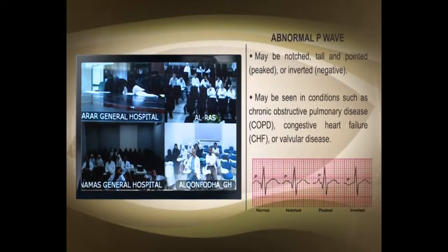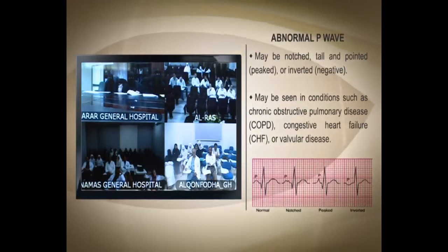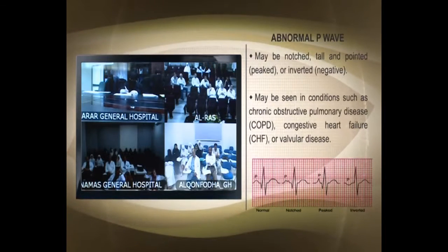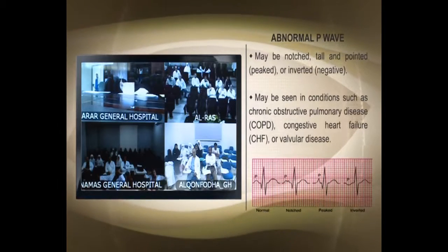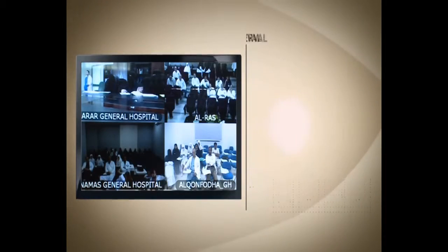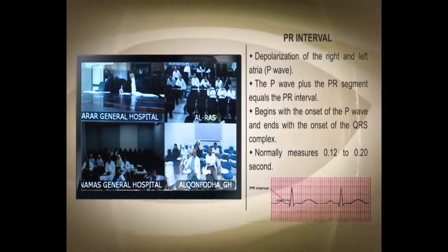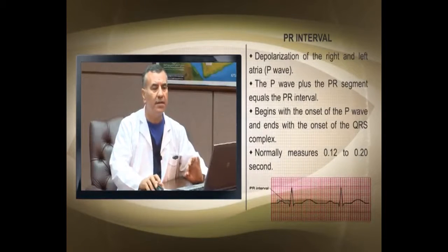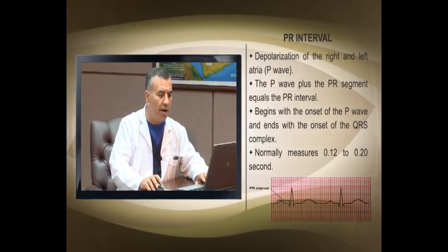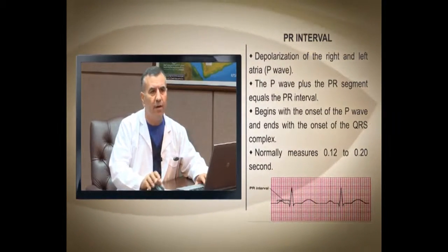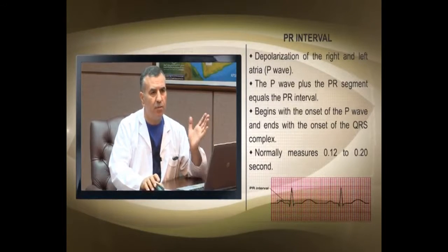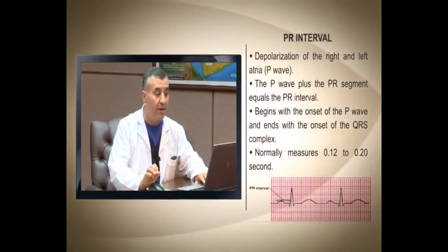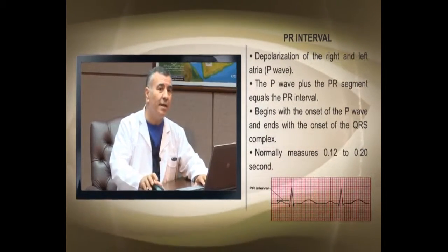The PR interval is one of the most important things to assess. Normally it should be between 0.12 to 0.20 seconds, which is three to five small boxes. Any PR interval longer than 0.20 seconds in a sinus rhythm is called a sinus rhythm with first-degree AV block. When assessing blocks, you identify the type by looking at the PR interval and the relationship between the P wave and the QRS.